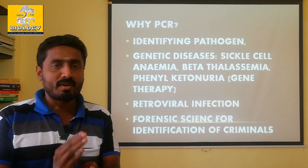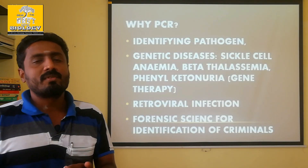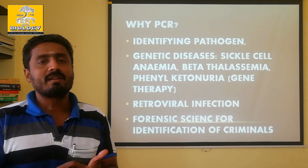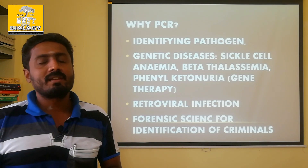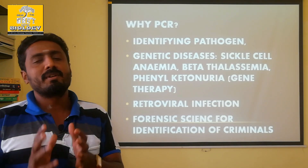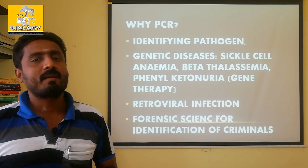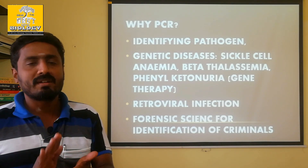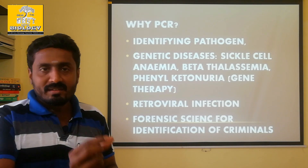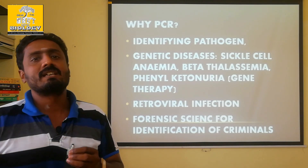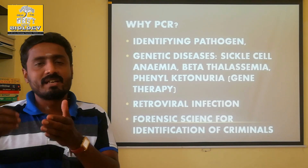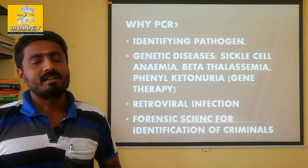For prenatal diagnosis, amniotic fluid is collected, which contains fetal cells and stem cells. From these cells, the DNA can be amplified. If there is a disease-causing DNA segment — such as the gene responsible for sickle cell anemia — even a very small DNA segment can be found and amplified using PCR, the Polymerase Chain Reaction.